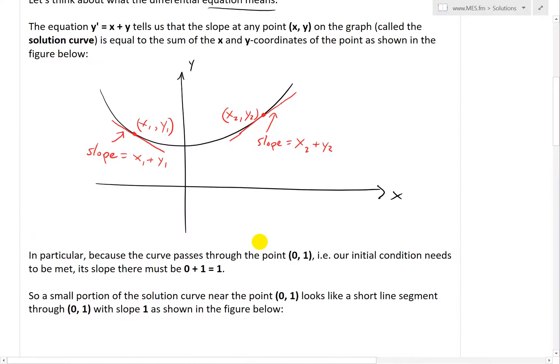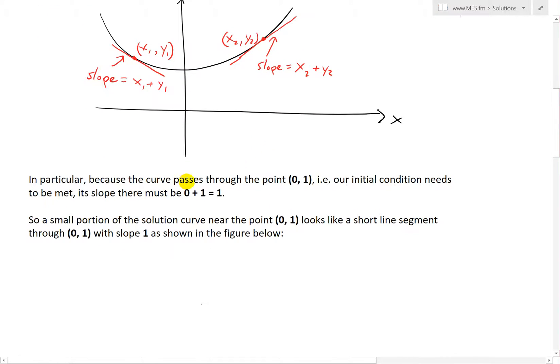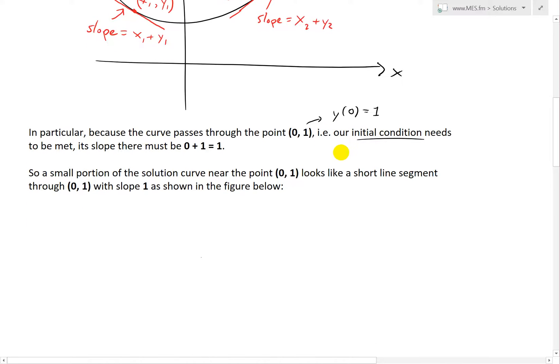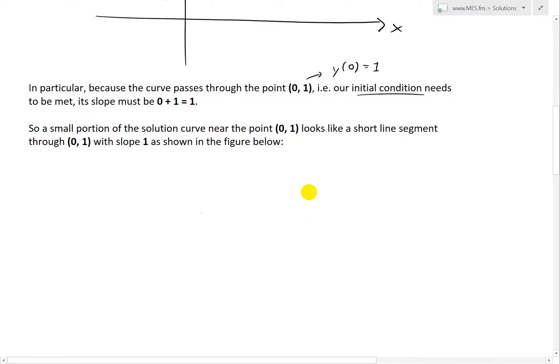But now in particular, what we're more interested in is because the curve passes through the point (0, 1), this is simply stating y(0) = 1, which is our initial condition, so this needs to be met. That's why our solution curve needs to pass through it. Its slope must be 0 + 1, or x right here plus y, which is 0 + 1.